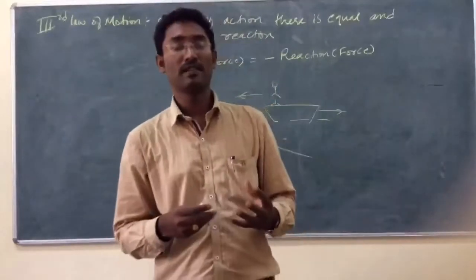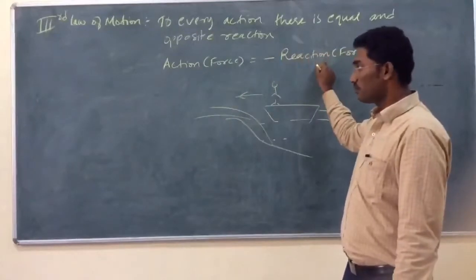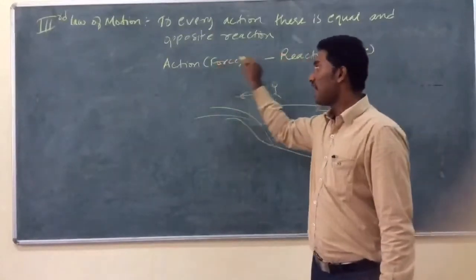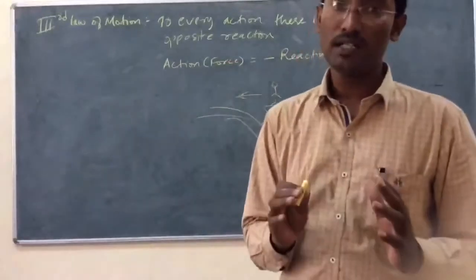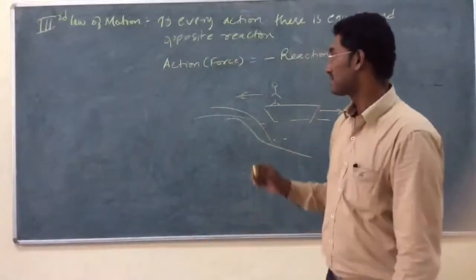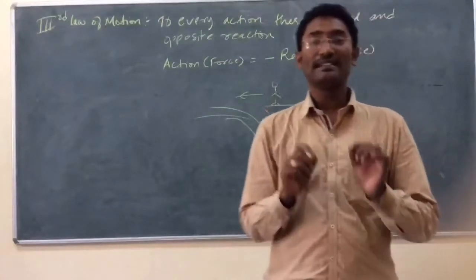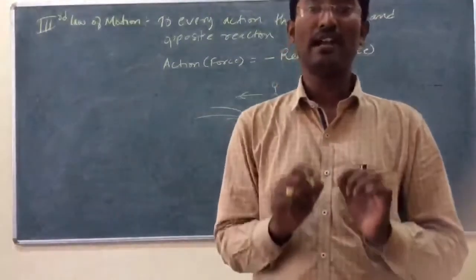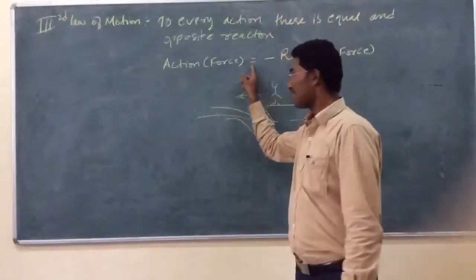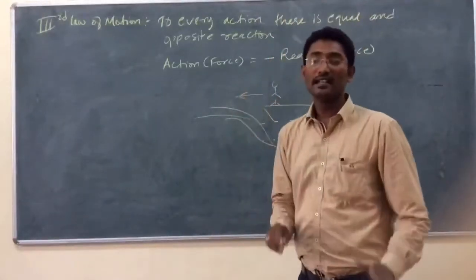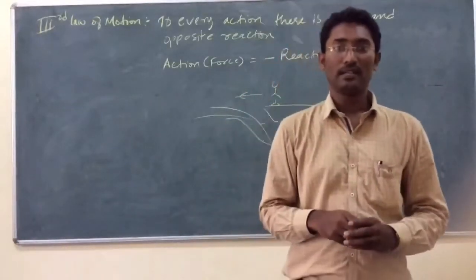So, action is a force and reaction is also a force. Action and reaction are exactly equal in magnitude but opposite in direction. The negative sign tells us that the direction of action and reaction is opposite, whereas the equal sign says that they are equal in magnitude. Thank you.